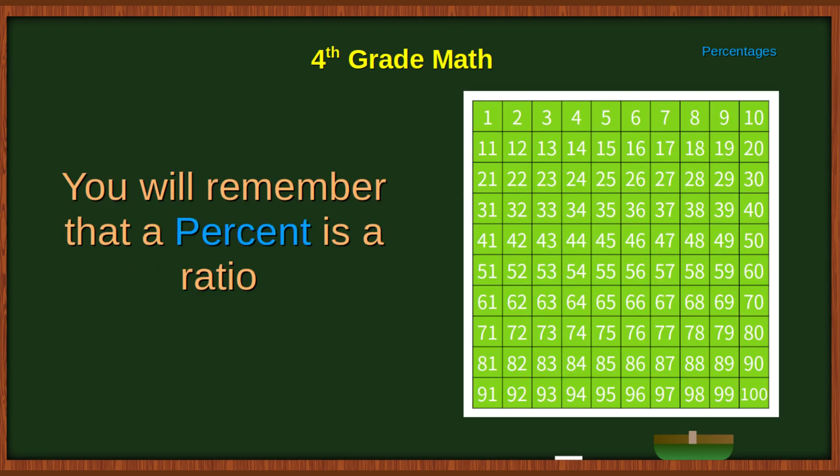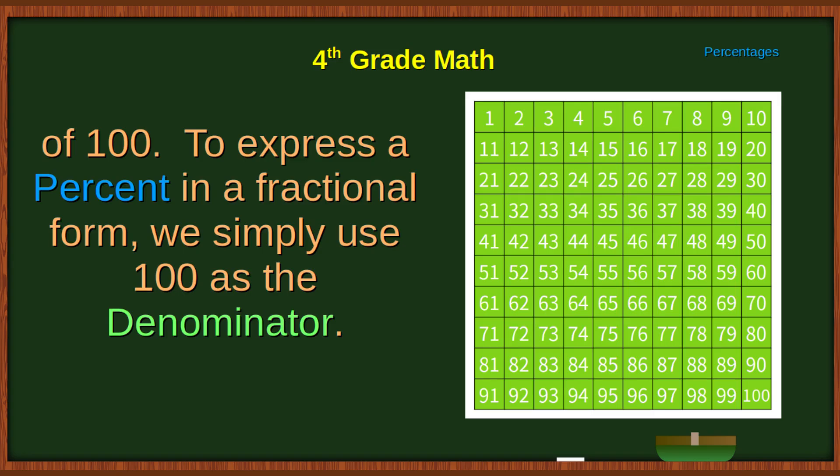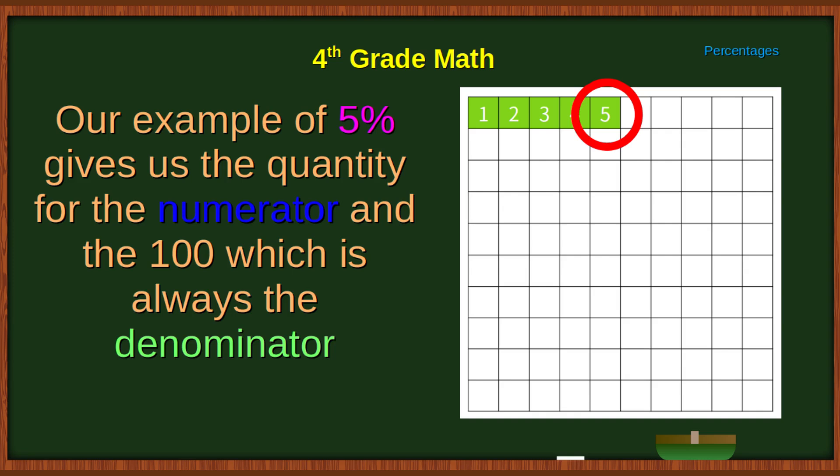We know that this chart shows 5%, 5% of 100. You will remember that a percent is a ratio of 100. To express a percent in a fractional form, we simply use 100 as the denominator. Our example of 5% gives us the quantity for the numerator and the 100, which is always the denominator.